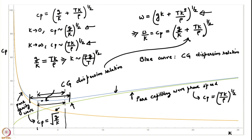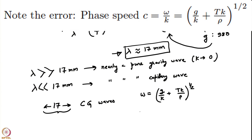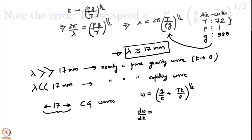Note that the phase speed has a minimum and is not a monotonic function. I encourage you to think about the group velocity of a capillary gravity wave. If you take the full dispersion relation omega = (gk + tk/ρ)^(1/2) and compute dω/dk, the group velocity for capillary gravity waves, you will find that even that has a minimum.